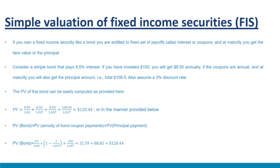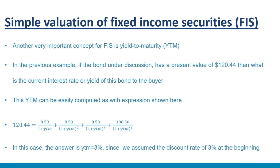The bond can be valued as a combination of an annuity — the coupon payments — and a single final payment of principal. There is another very important concept: yield to maturity. If the bond has a present value of $120.44, what is the current yield to the buyer? Bond prices fluctuate with interest rates. As interest rates rise, bond prices fall, and when interest rates fall, bond prices rise.